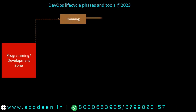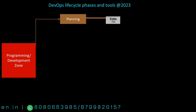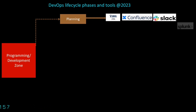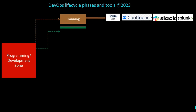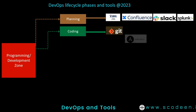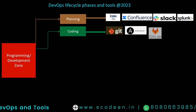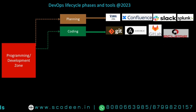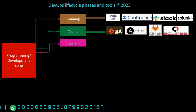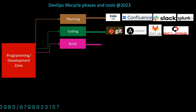Now we will learn about the various DevOps tools used during each phase. In the planning phase, the tools are: Jira, Confluence, Slack, and Splunk. In the coding phase, the favorite tools are: Git, GitLab, and sometimes Eclipse.